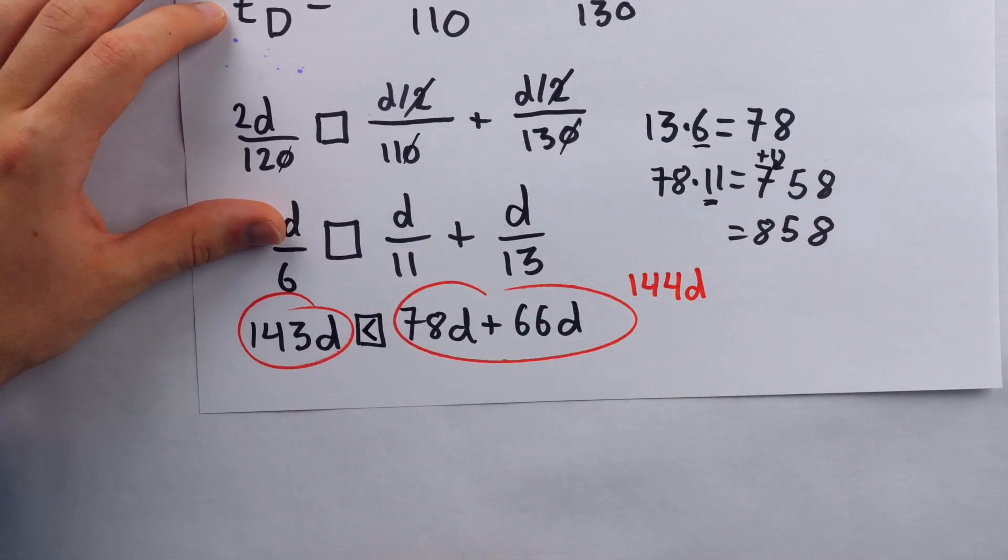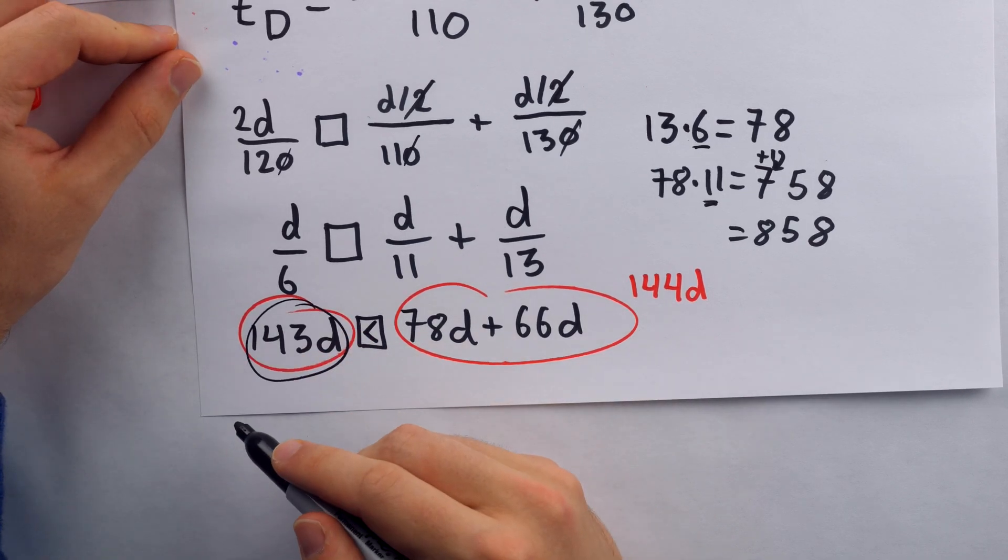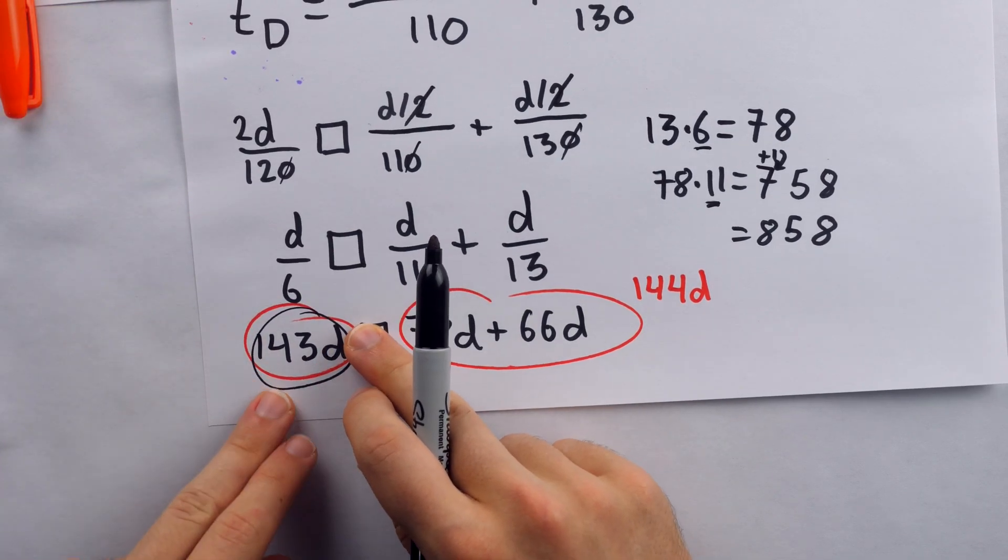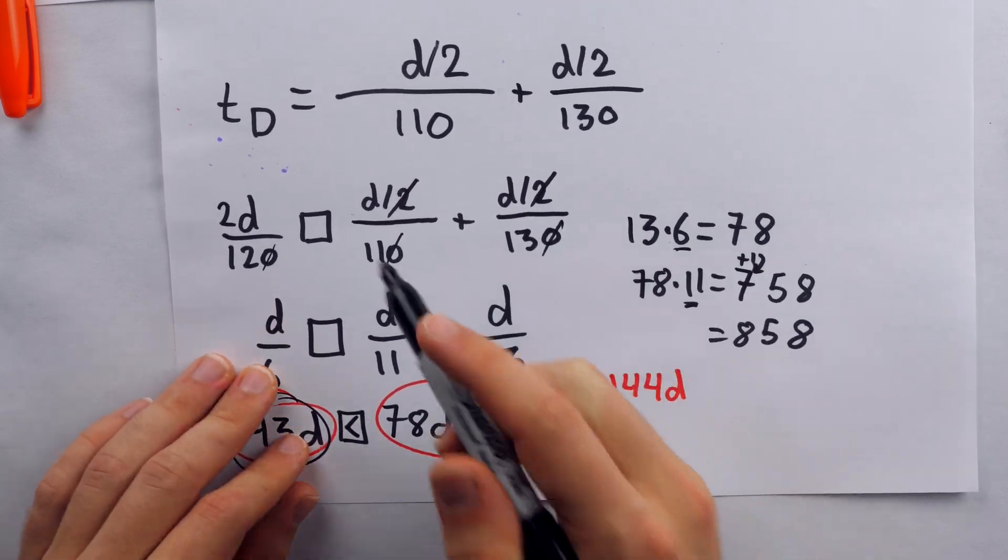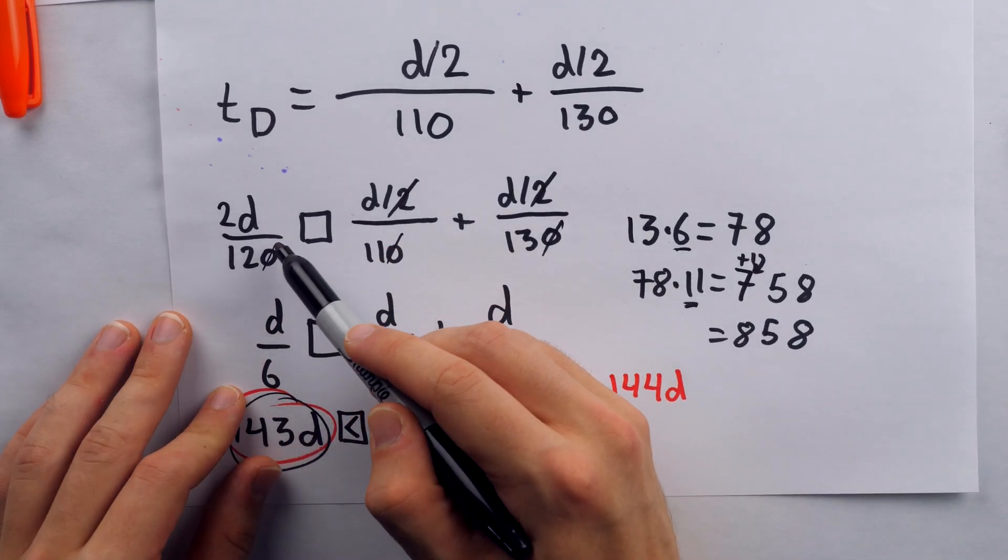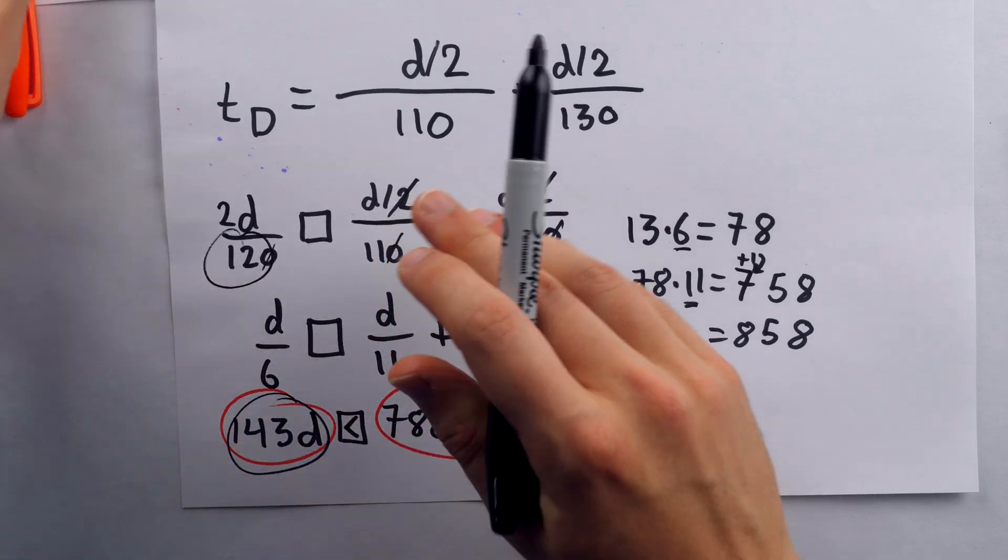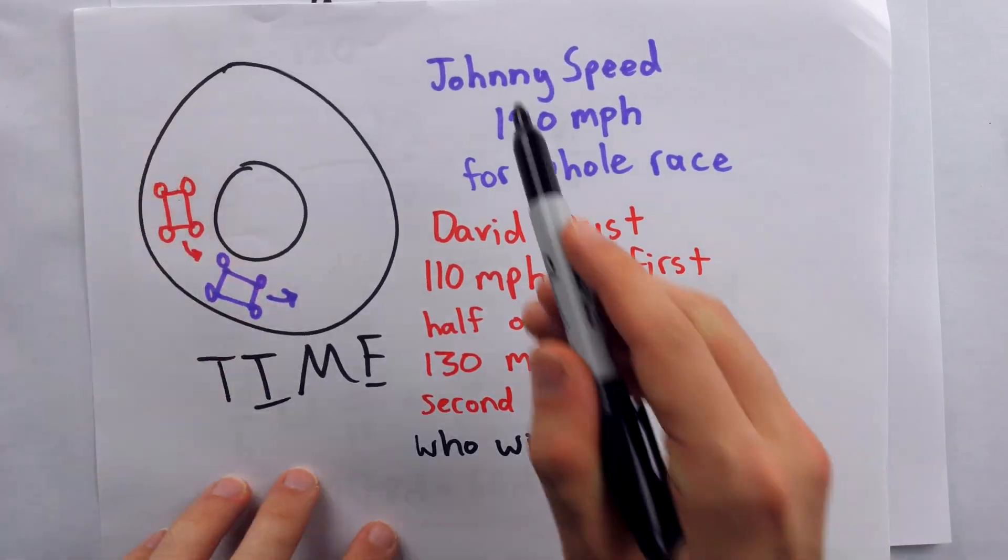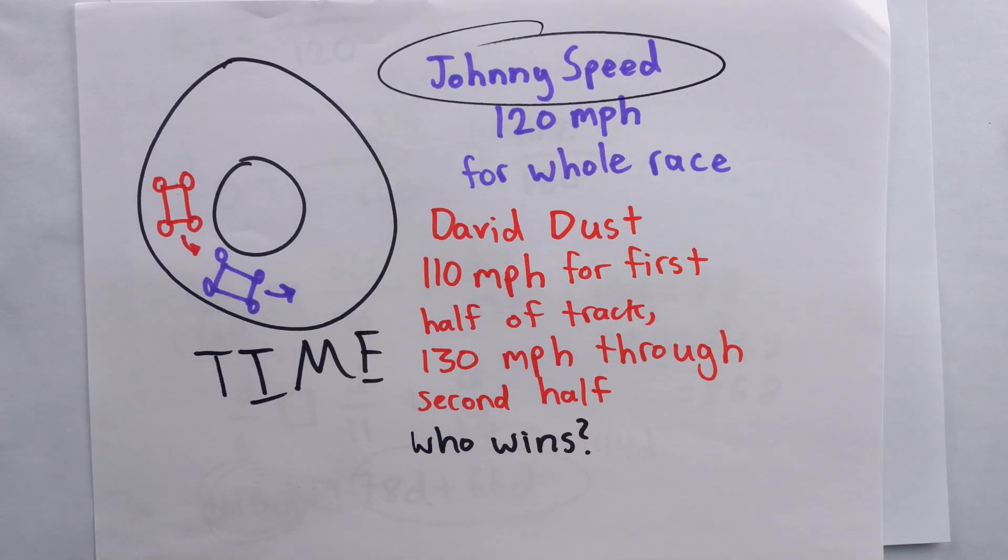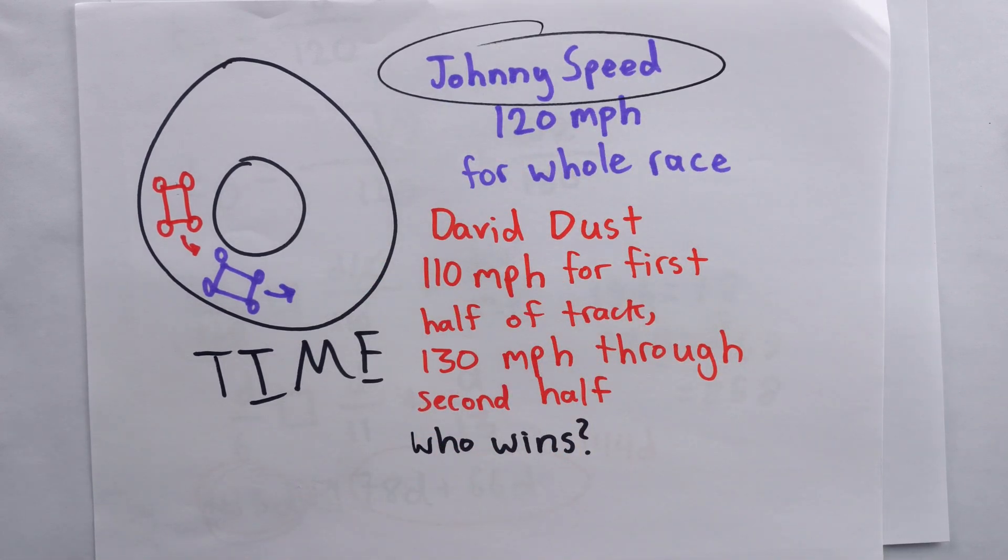So it was the quantity on the left side that is smaller, which means that guy is the guy who won the race. Who is that guy? Well, that's the guy who was going 120 miles per hour for the entire race throughout the entire track. And that was our good friend, the champion, Johnny Speed.